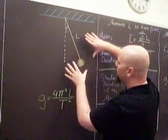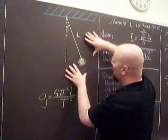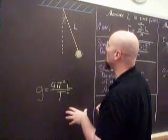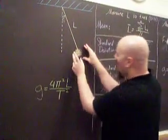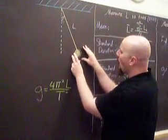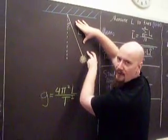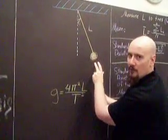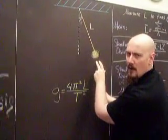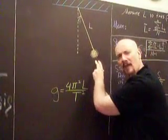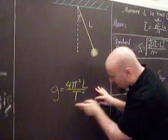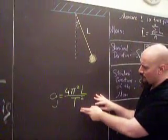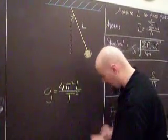We're going to look at this. We're going to have a pendulum — a metal ball attached to a very, very thin string. It's going to oscillate back and forth, and from that we can find the acceleration due to gravity with this formula: 4π²L divided by the period squared.